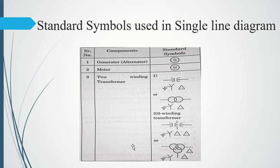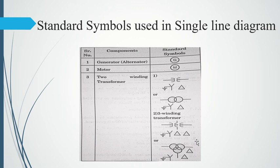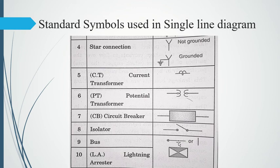For a three-winding transformer, the old method adds an extra coil, and we indicate the connection topology — star or delta — for each winding. In the modern method, three circles are connected together, similar to how we connected two circles for a two-winding transformer, just adding one more circle for the third winding.